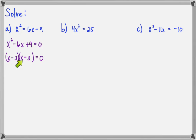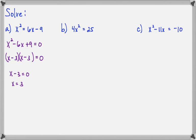Both factors happen to be the same: x minus 3 times x minus 3. That means even solving both gives only one answer. If x minus 3 equals 0, moving negative 3 to the right gives x equals positive 3. That is our only solution. Even though 3 is the solution for both factors, there's no need to list it twice.